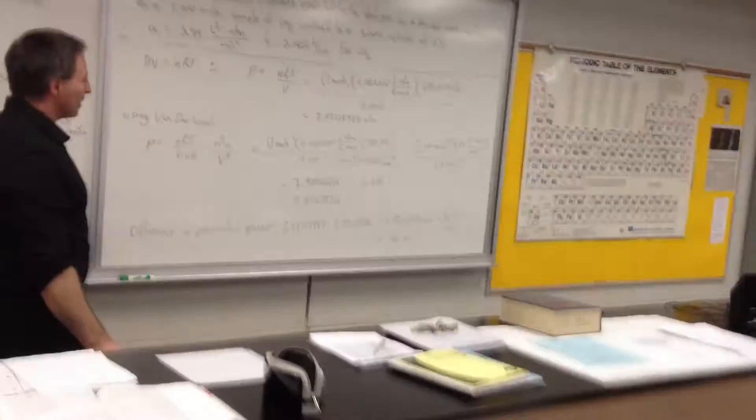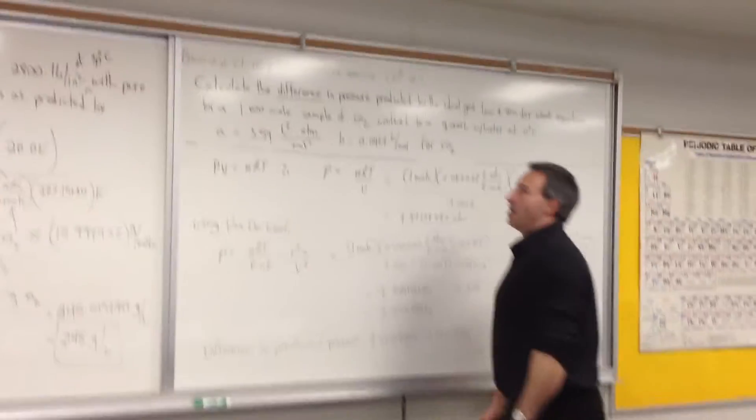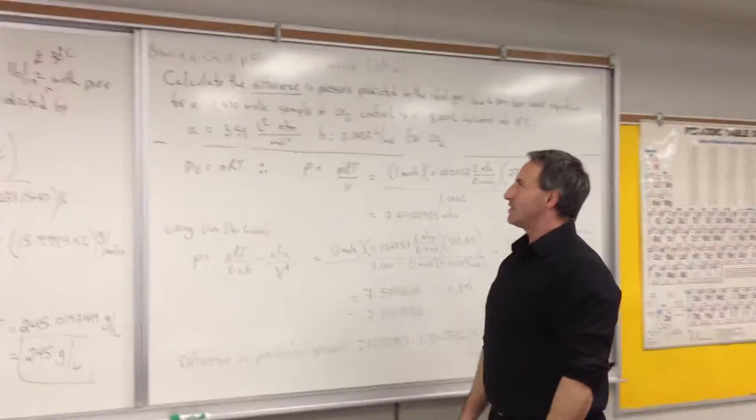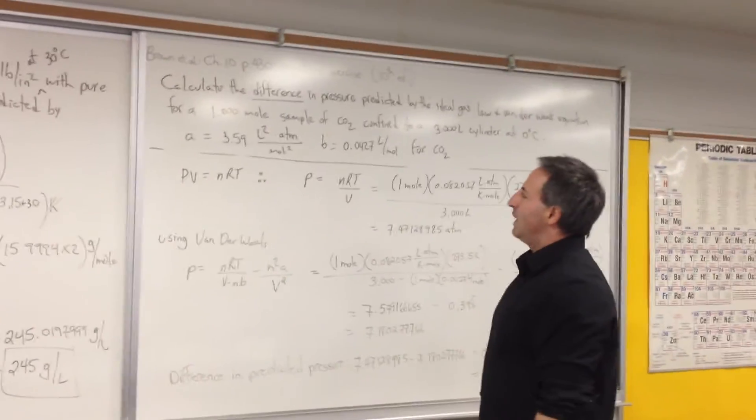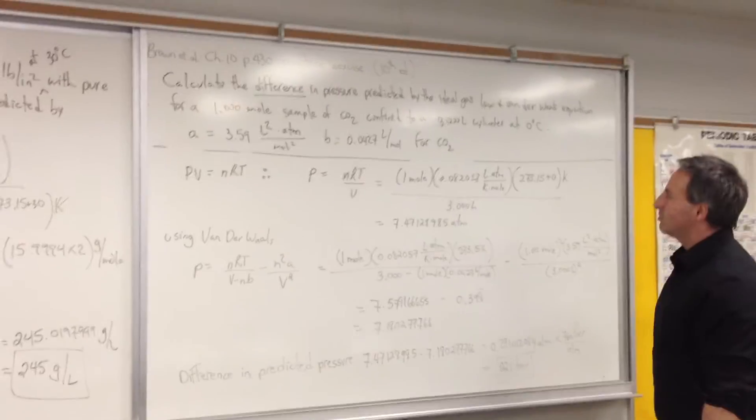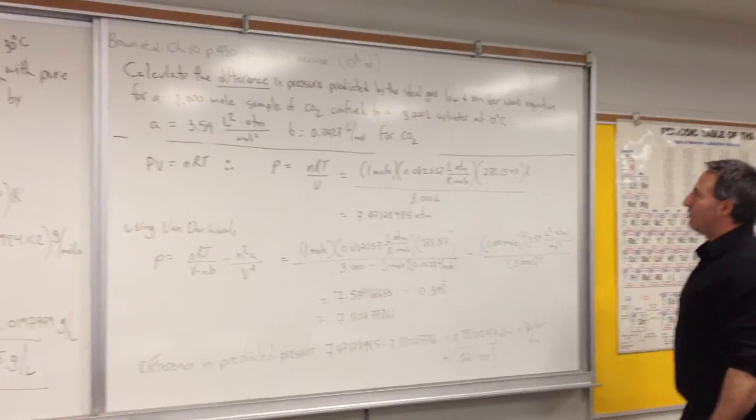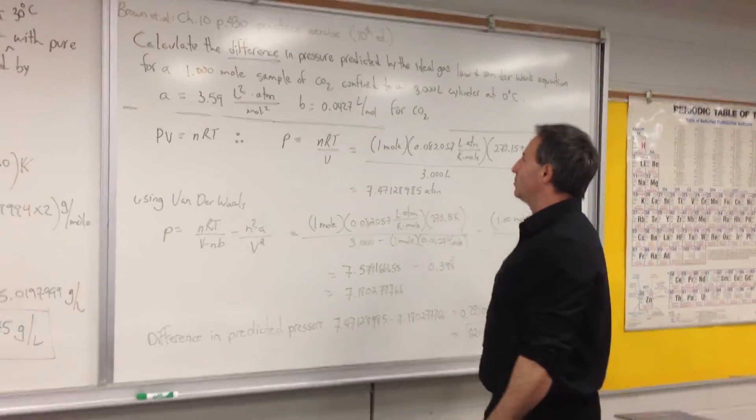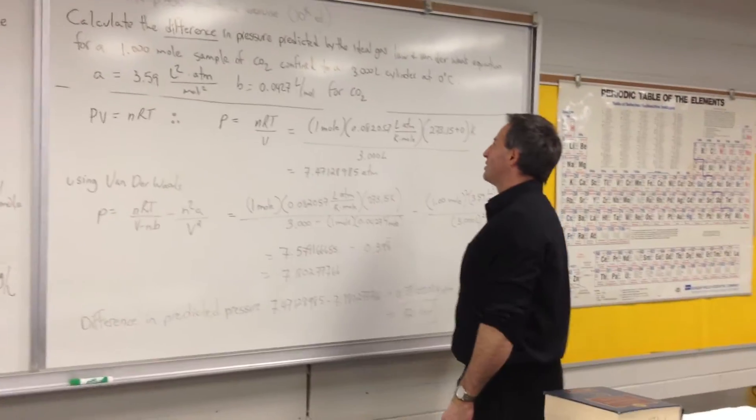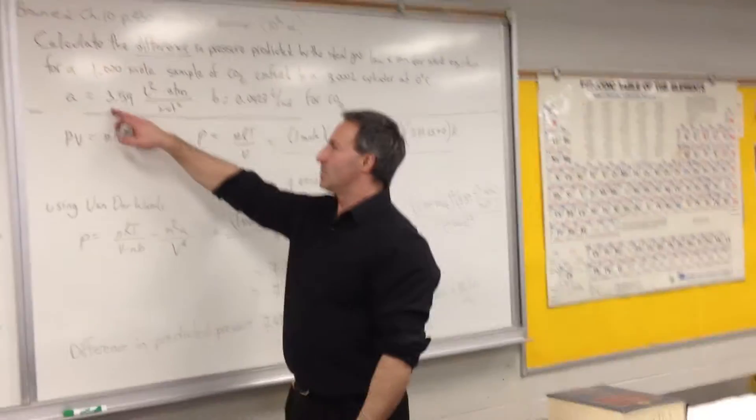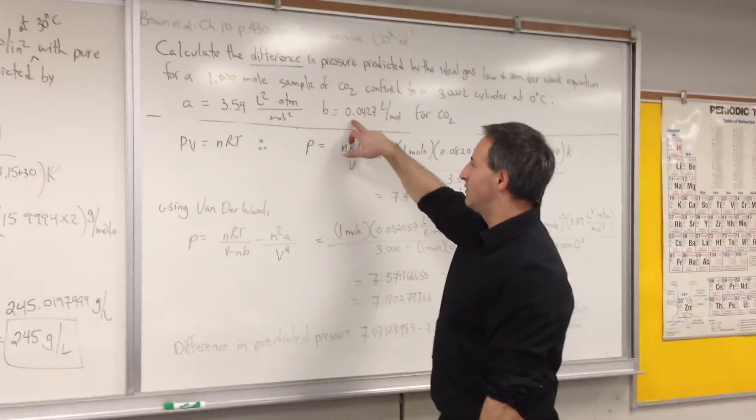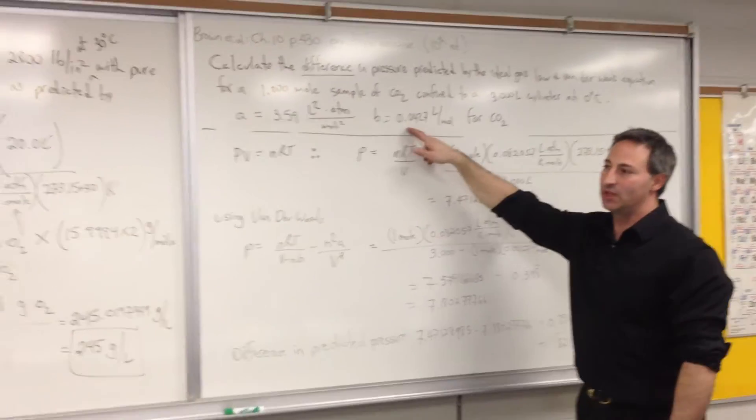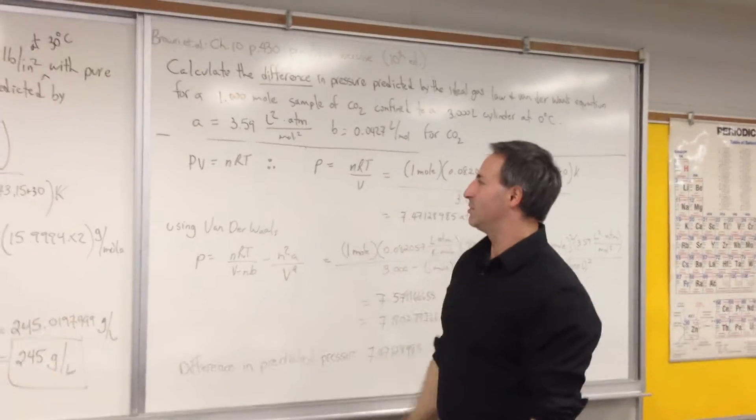On the next question, we have an adaptation of a question from Brown's textbook. It's from Chapter 10, page 430, one of the practice exercises. I ask, calculate the difference in pressure predicted by the ideal gas law and Van der Waals equation for a 1-mol sample of carbon dioxide confined to a 3-liter cylinder at 0 degrees Celsius. And you're provided with the two values used in the Van der Waals equation. They're obtained empirically, meaning experiments have to be done on different gases. Different gases have different values of A and B.